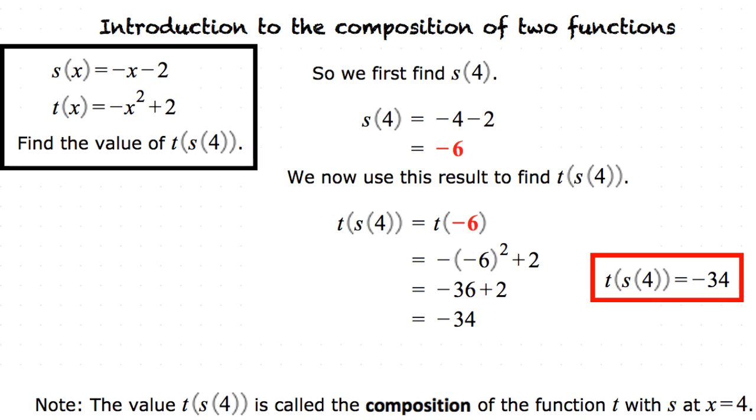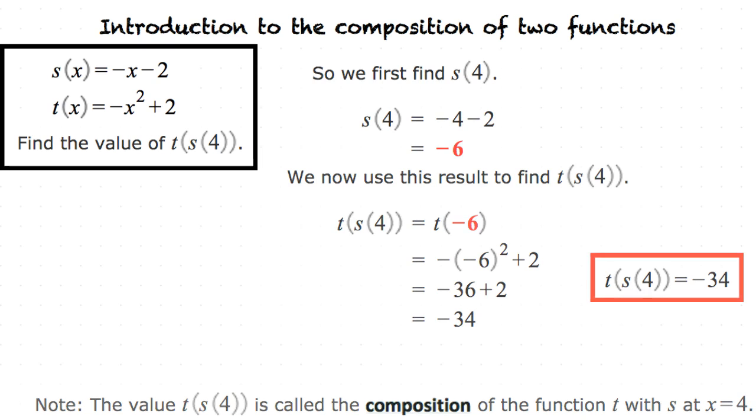In this case we have s(4) equaling -6 and then that gets plugged in. So we have t(-6). Yeah exactly. Now using the same functions let's try doing another example that switches the inputs. So let's find s(t(4)) opposed to t(s(4)).